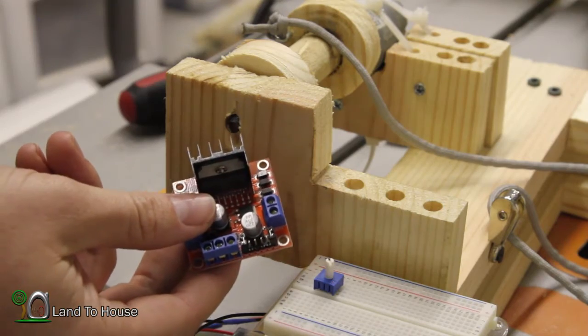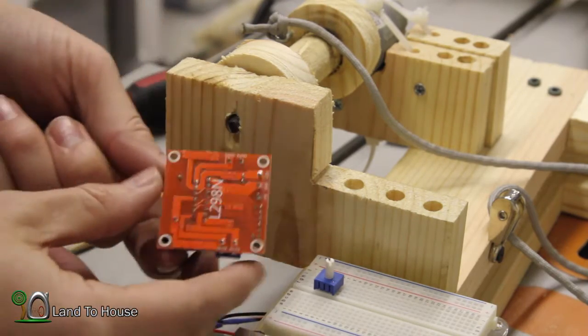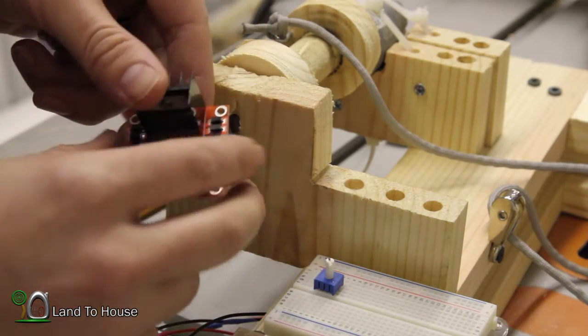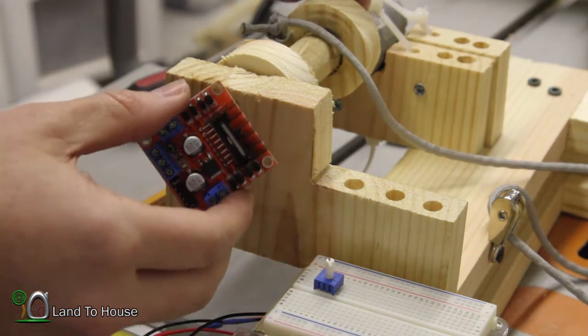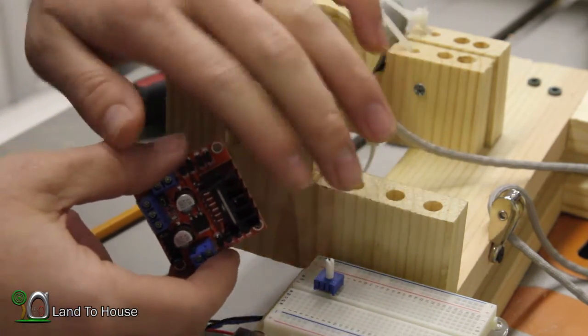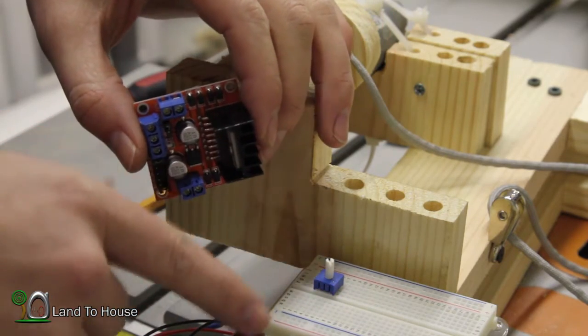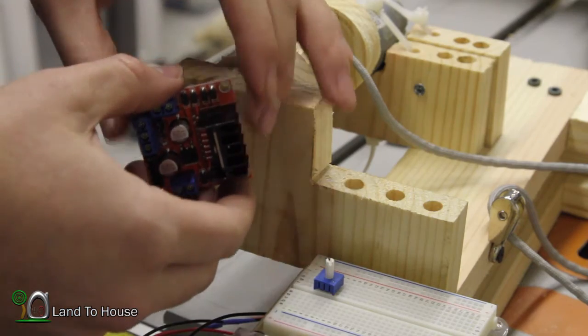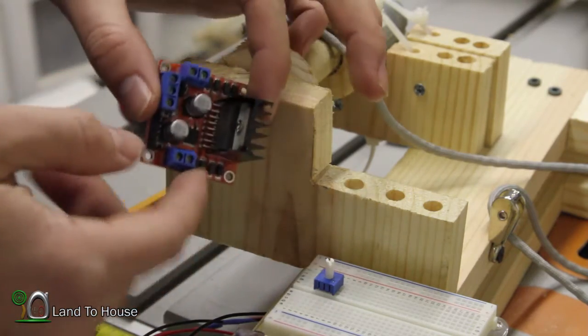We've got one more control board to install and it's this guy, the L298N. What this does is it operates the motor in two directions. So when you get an output from the Arduino that says turn the motor, you've got to tell it which way to go. So that's what this board is going to do.